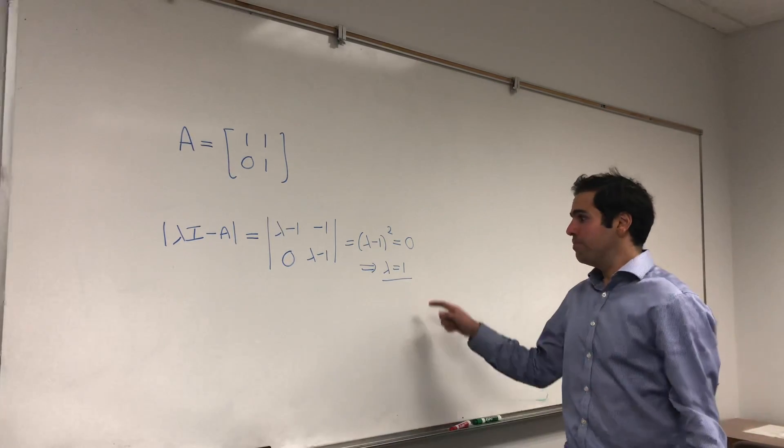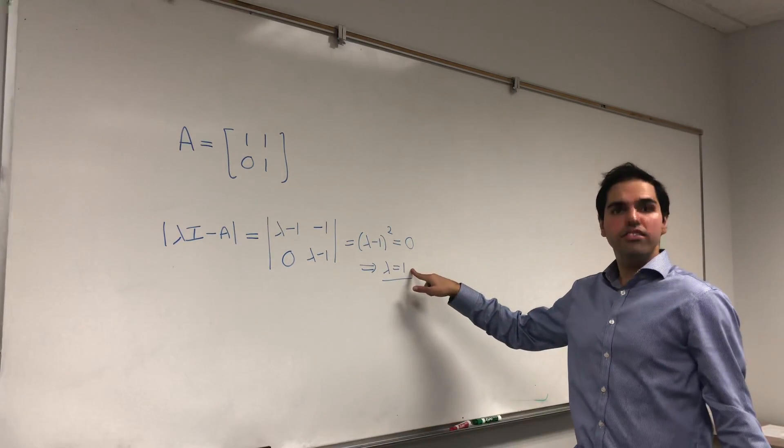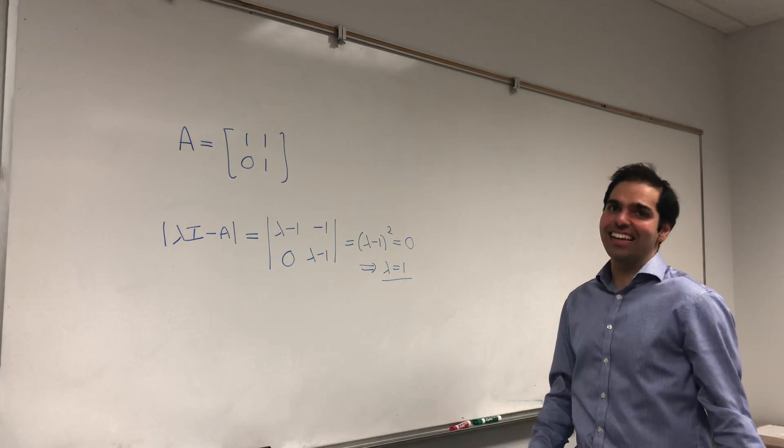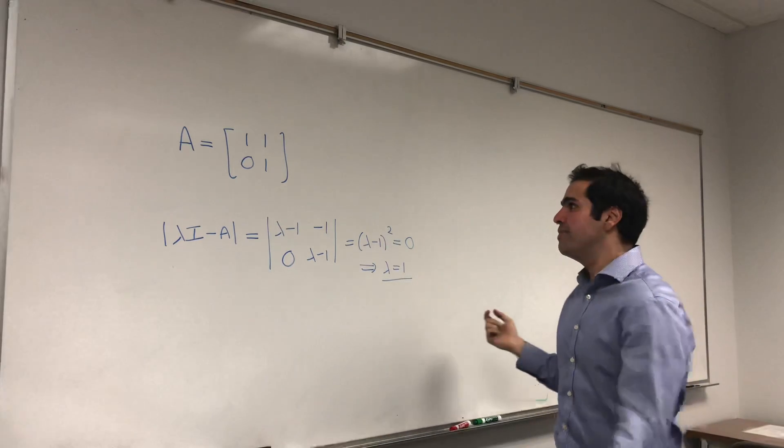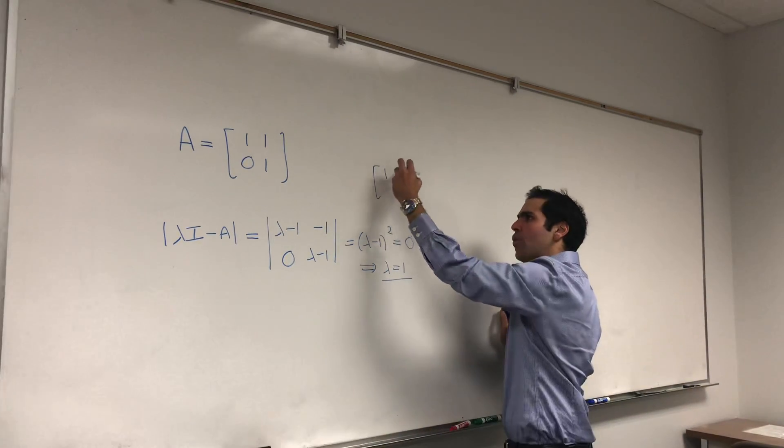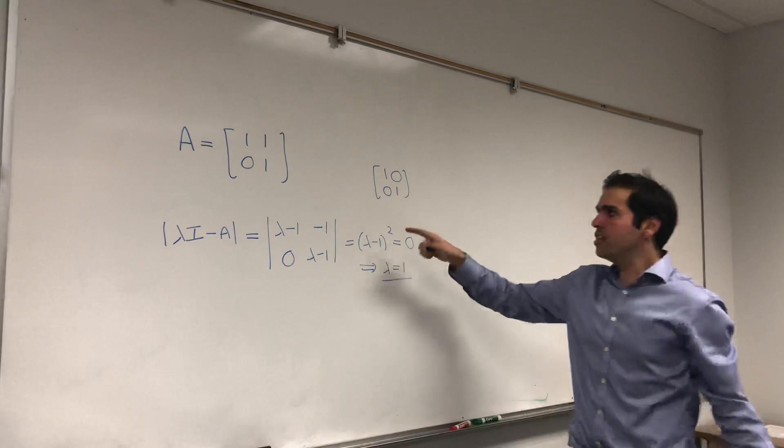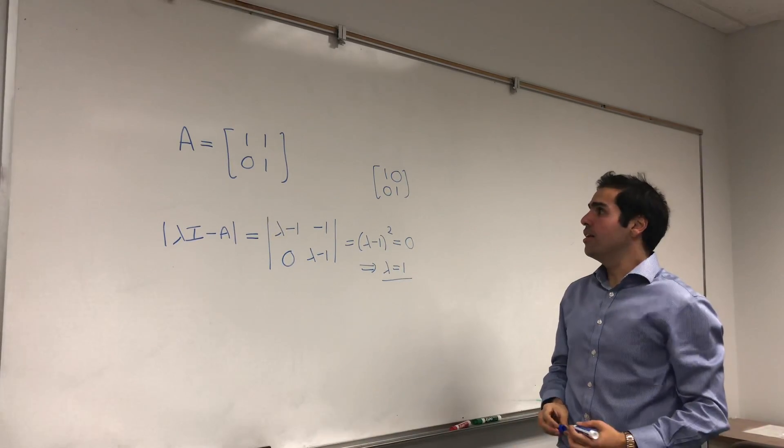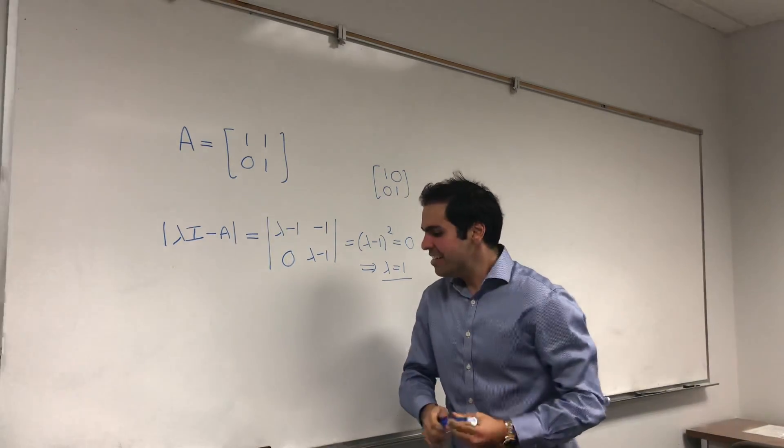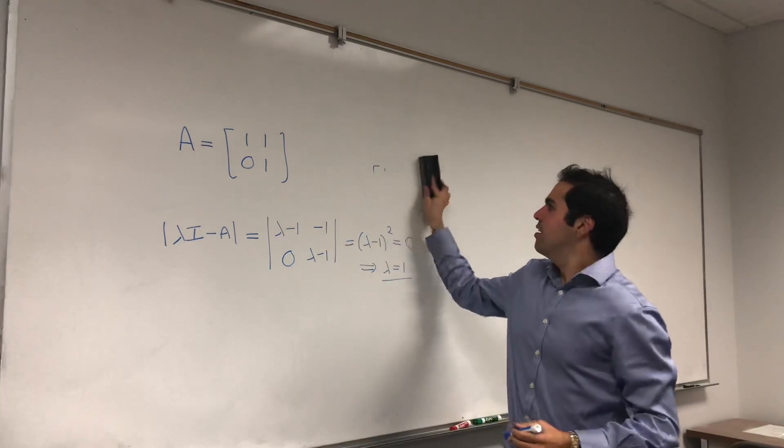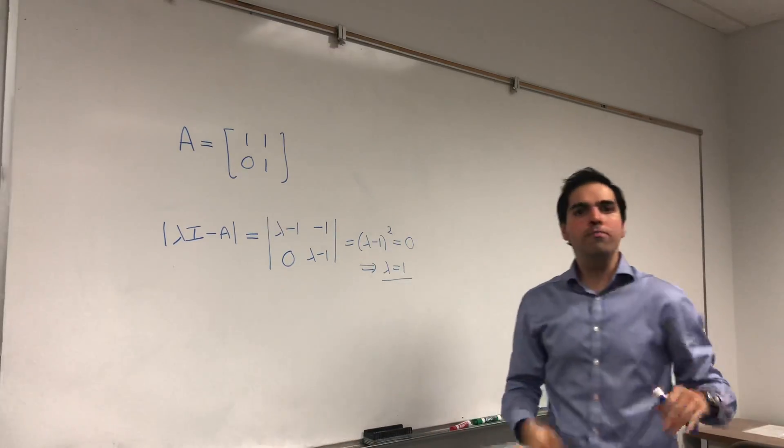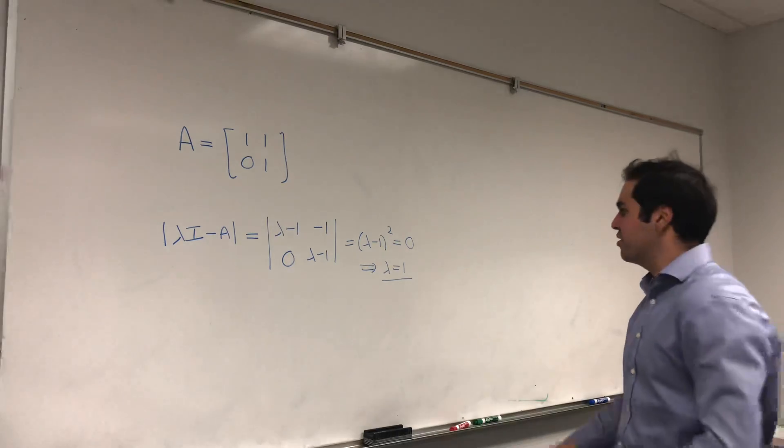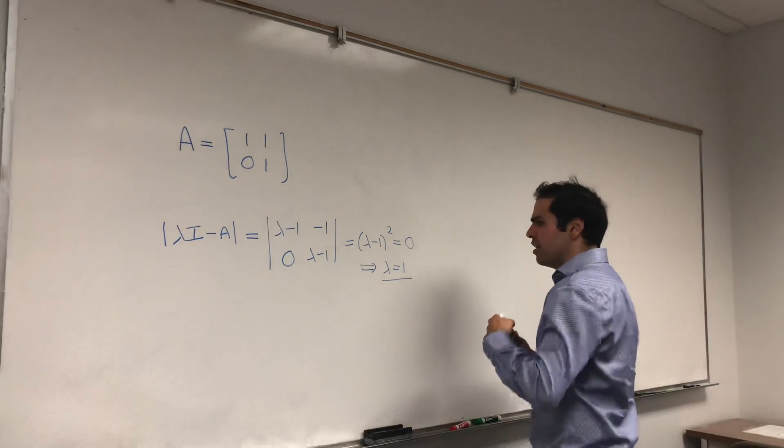Be careful. So just because there's one eigenvalue, it doesn't mean that it's not diagonalizable. For example, the identity matrix also only has just one eigenvalue, but this one is diagonalizable because it is diagonal. So the point is to determine whether a matrix is diagonalizable or not, you really have to look at the eigenvectors.